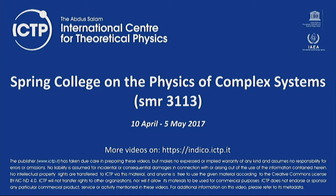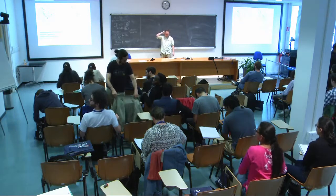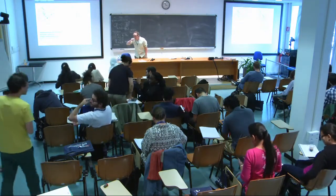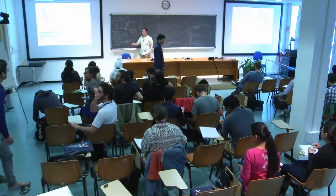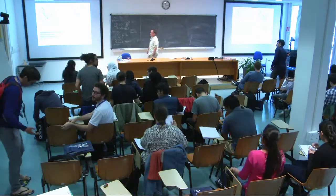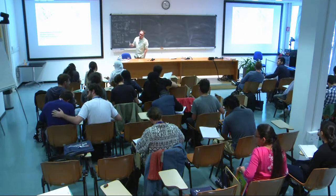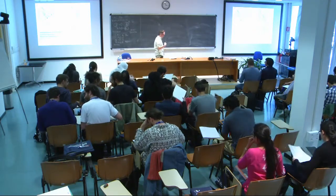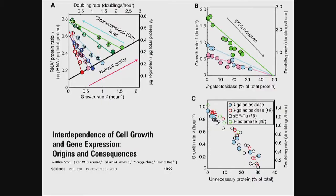So to remind you, last time we were looking at the consequences of this proteome partitioning picture. We'd spent a lot of time in the early parts of these lectures looking at first historical works connecting different observables to the physiology of the cell. We finally arrived at these two empirical relationships: one for the ribosome abundance under nutrient change or translation inhibition, and its companion set of data for the expression of what we call the constitutive protein, which is an unregulated protein.